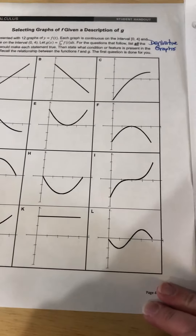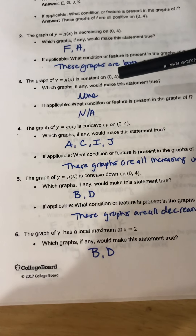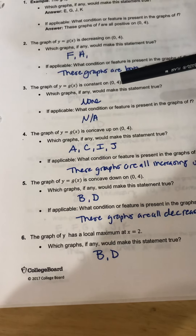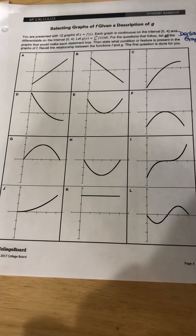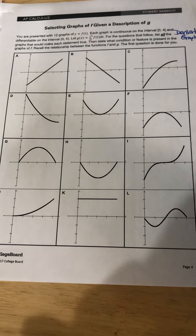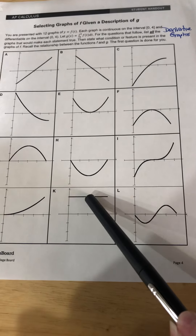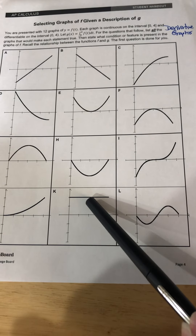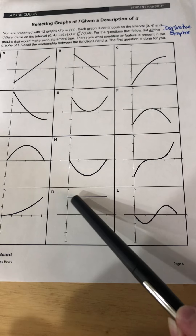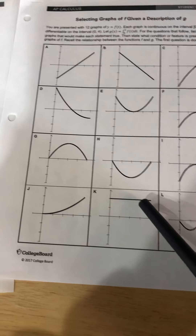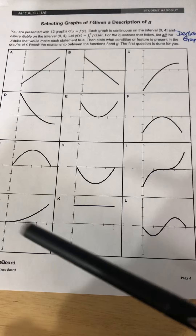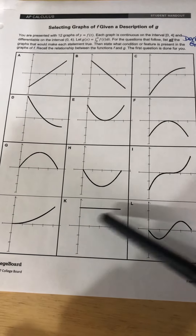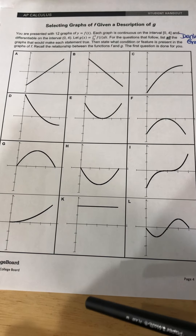Number 3 says you're looking for where g(x) would be constant on 0 to 4. It's a trick question because none of these are actually going to work, because none of them are equal to 0 the whole time. So don't be fooled by this one. K is positive, so that means it's increasing — it just has a steady slope of apparently 2. That's not a constant function. The derivative of a constant is 0, so we should be looking for a graph that equals 0, and none of them do.